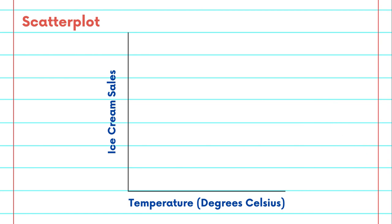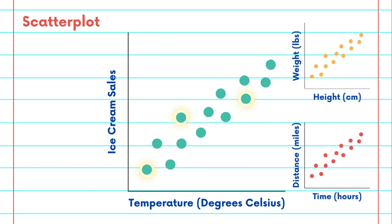At its core, a scatterplot is a graph that displays individual data points on a two-dimensional plane. Each point represents one observation, and the position of that point is determined by two variables. Your graph might highlight the correlation between measurements like height and weight or time and distance, for instance.